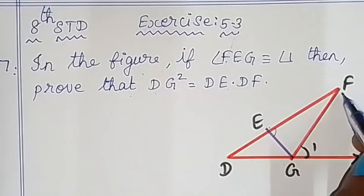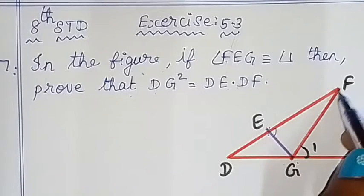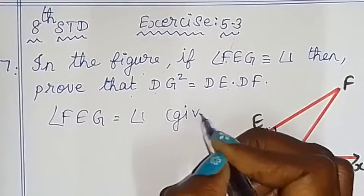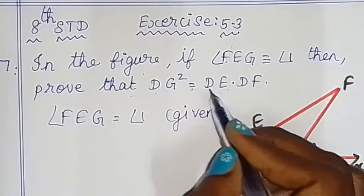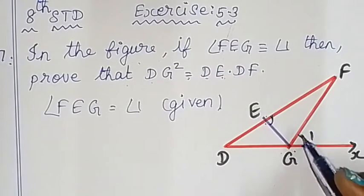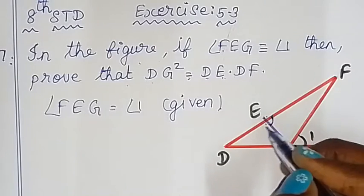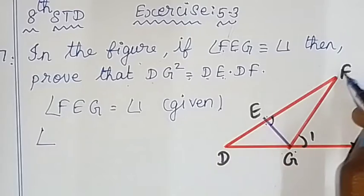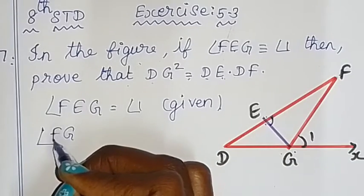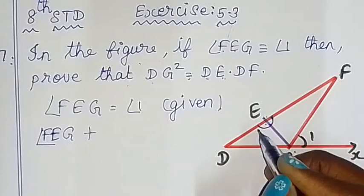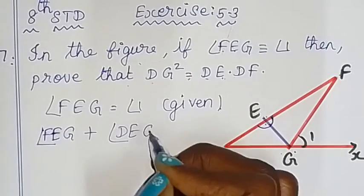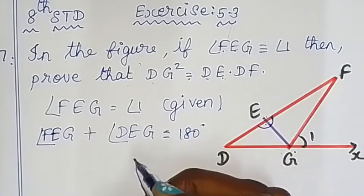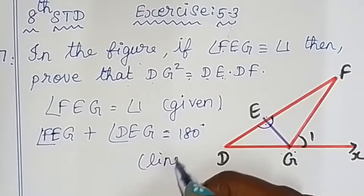What do we do now? Angle FEG is congruent to angle 1. Since DF is a straight line, angle FEG and angle DEG are a linear pair. These two angles add up to 180 degrees. So this is the linear pair of angles.